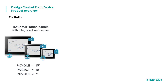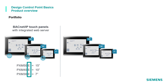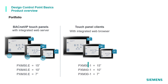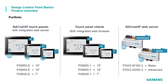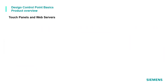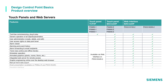The three BACnet IP touch panels have display sizes of 7, 10, or 15 inches, named PXM30, PXM40, and PXM50, marked with a final letter 'E'. This letter differentiates touch panels with an integrated web server from those equipped with only a web browser, named with the final number '1'. Those touch panels acting as simple clients can be flanked with a pure web server device: the PXG3W100-2 for basic operation or the PXG3W200-2 for more advanced operation.